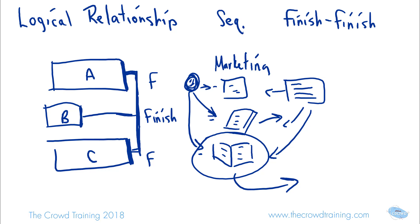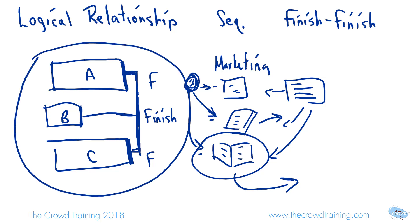When we move any of these activities — let's say something before activity A gets delayed — we might think we'll just bump back A. But no, we can't just bump that back, because we might actually be bumping back all three activities since they are logically connected. As you're controlling your schedule, you need to consider how a delay affects not just activity A, but all activities that have this logical dependency of Finish to Finish.